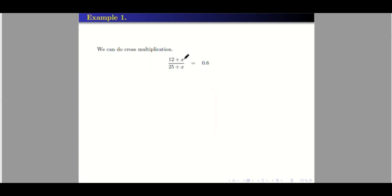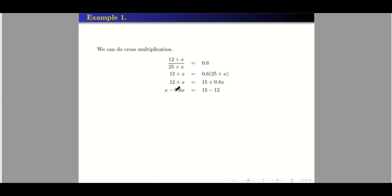We can do cross multiplication here since we have one rational expression on each side — we can always put over 1 here. So cross multiplication gives us: 12 plus X is equal to 0.6 times (25 plus X). Distributing: 0.6 times 25 is 15, and 0.6 times X is 0.6X. We then separate terms with X from those without X, transposing 0.6X to the other side. So we have X minus 0.6X and 15 minus 12. Note there is an invisible 1 here, so 1 minus 0.6 is equal to 0.4.